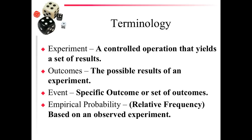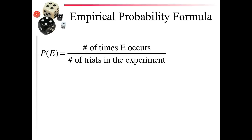Today we're going to be talking mostly about empirical probability. This is the relative frequency of an event — frequency is how many times something happens, and relative means in relation to something else. It's always based on an observed experiment. The formula is P(E), the probability that event E occurs, equals the number of times E occurred out of the total number of trials in the experiment. This is the relative frequency of E occurring in relation to how many times the experiment was performed.